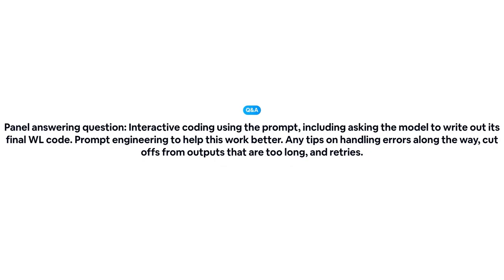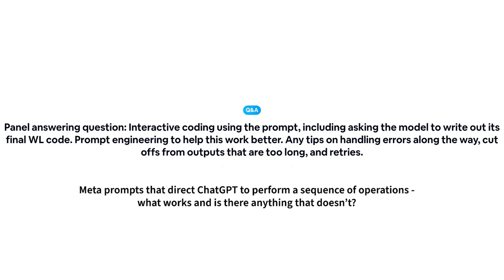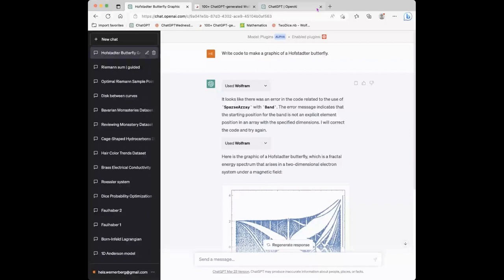The next question was from Jason — not me. It was two parts. First part: interacting code using the prompt, including asking the model to write out its final Wolfram Language code, and prompt engineering to help this work better. Any tips on handling errors along the way, cutoffs from outputs that are too long, and retries? The second part: meta prompts that direct ChatGPT to perform a sequence of operations — what works, and is there anything that doesn't? Michael had some insight into this. Let me share my screen. I have a couple of things I want to show.